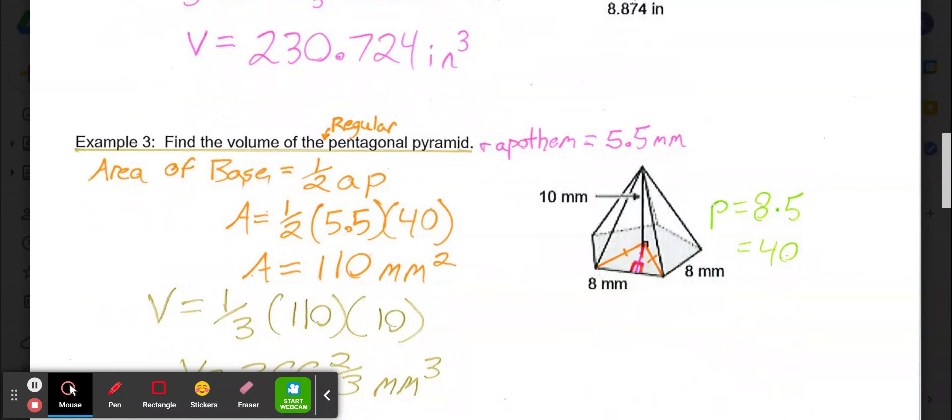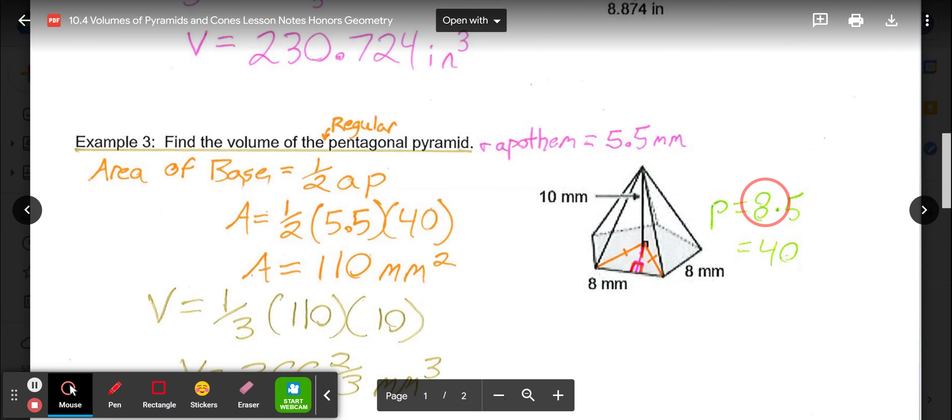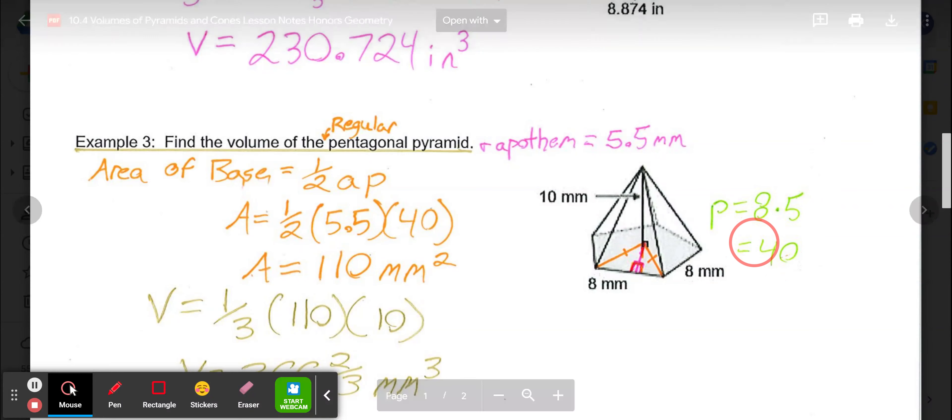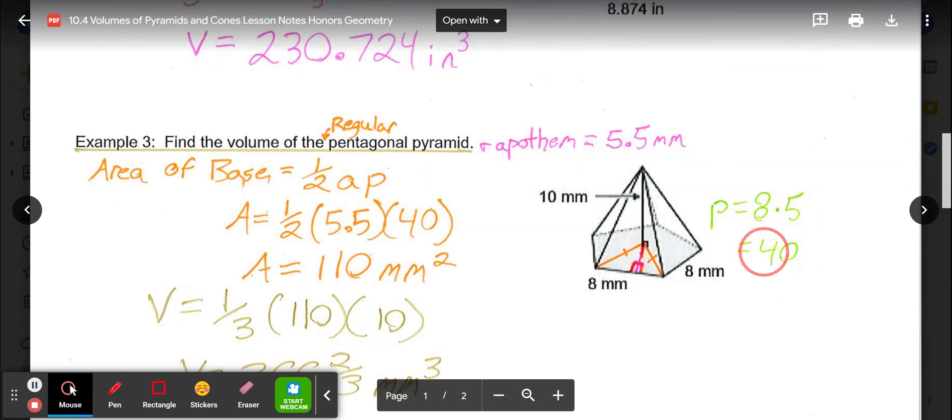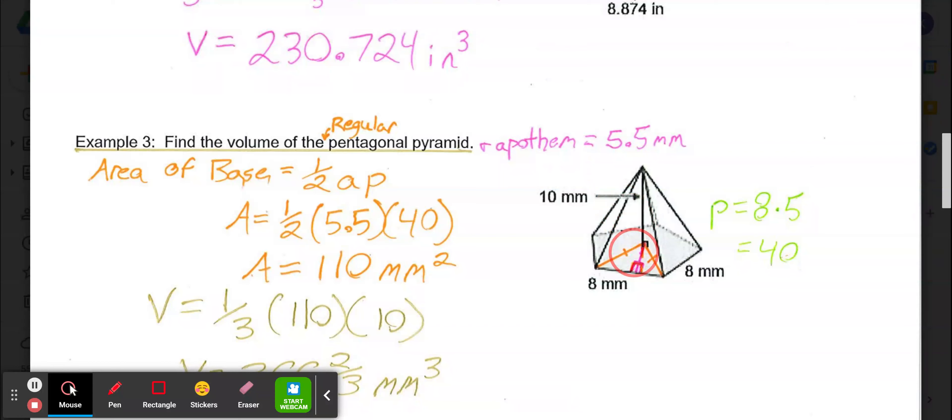Example 3, we're looking at a regular pentagonal pyramid. It matters if it's a pentagonal pyramid or a regular pentagon, so we're making that distinction here that it is a regular pentagon. Our base is a pentagon with sides of 8, so that perimeter would be 8 times the 5 sides which would give us 40. The reason the perimeter of the base matters is our area for a regular polygon formula is one-half the apothem length multiplied by the perimeter of the base. We know our perimeter of the base was 40.